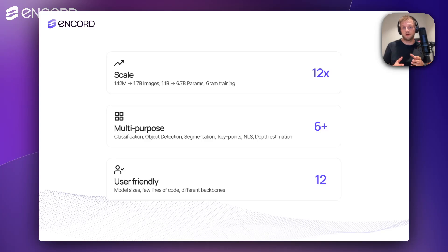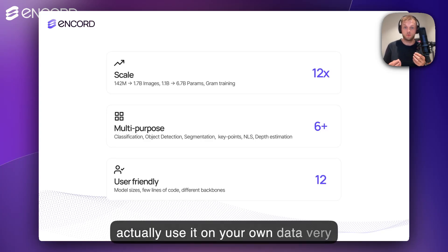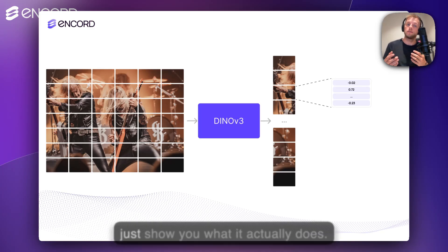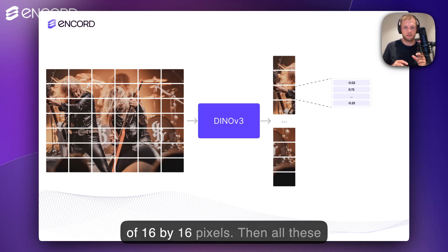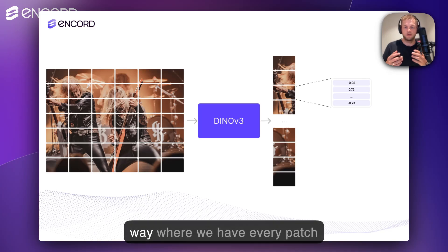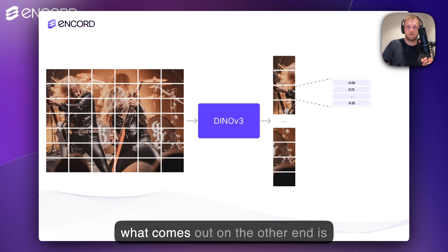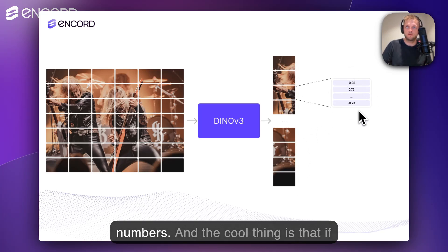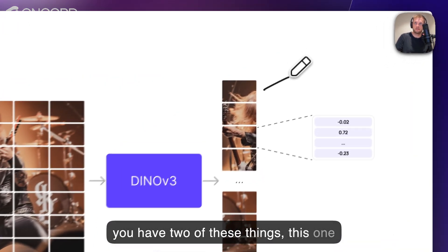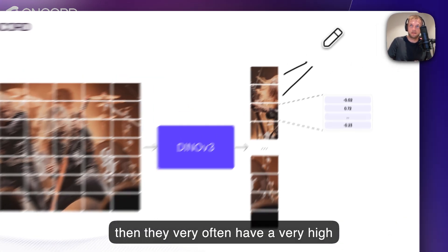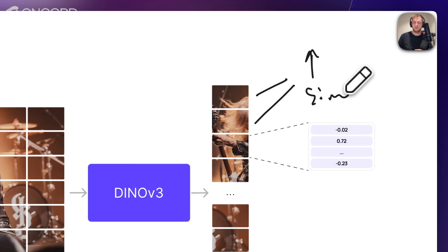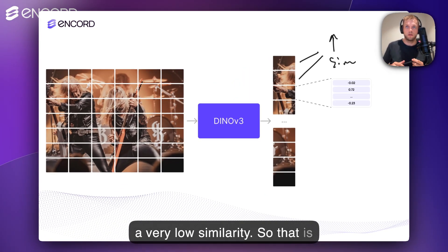The third thing is that it's extremely user-friendly. I'll show you in the end how you can actually use it on your own data very easily. Before we get too deep into benchmarks and applications, let me just show you what it actually does. So take an image like the one on the left here, and then chop it into patches of 16x16 pixels. Then all these patches are processed by DINO in this attention way, where every patch attends to each other. What comes out on the other end is a long sequence of embeddings — a long list of numbers. The cool thing is that if two embeddings cover the same semantic content, they very often have a very high similarity, while if they're very different, they will have a very low similarity.